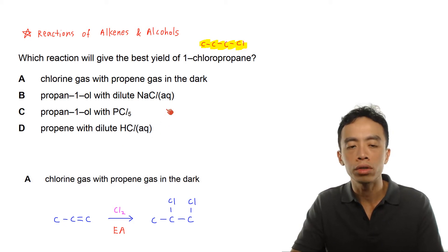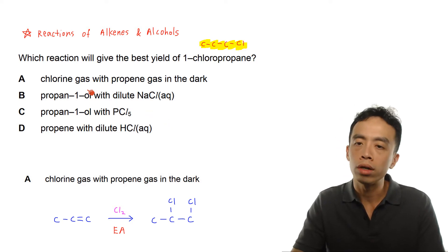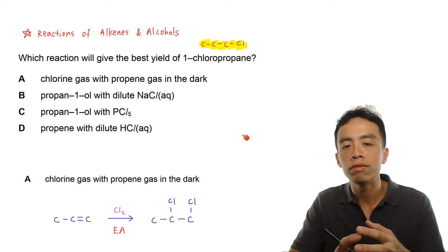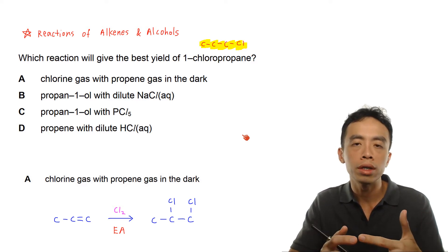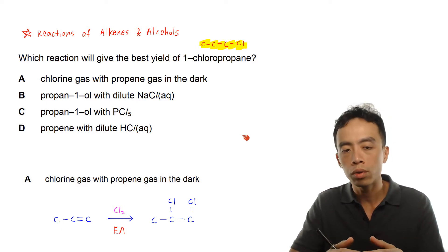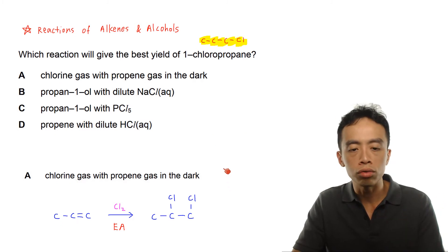So you notice the reactions are actually targeting alkenes and alcohol, propan-1-ol. So if we are familiar with the reactions of alkenes and alcohols, then this is a pretty straightforward question. Let us just run through this option.